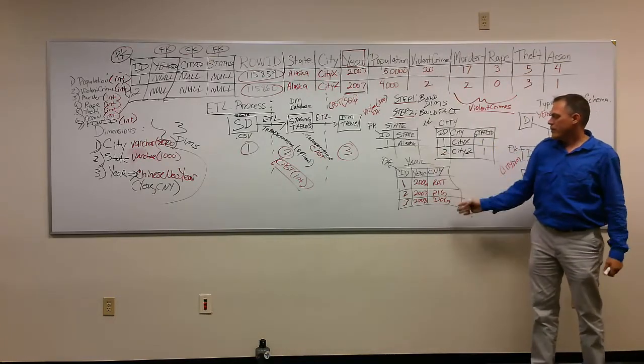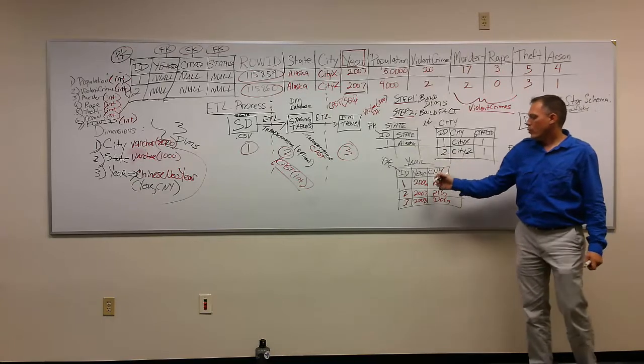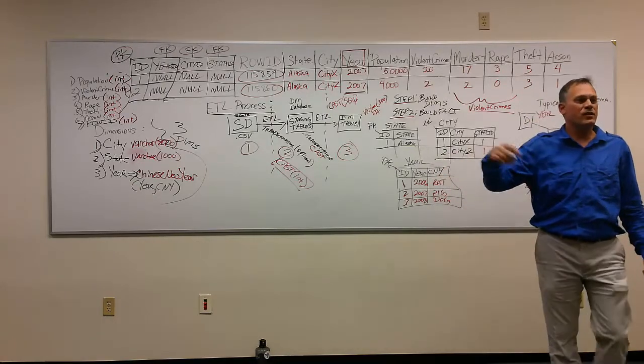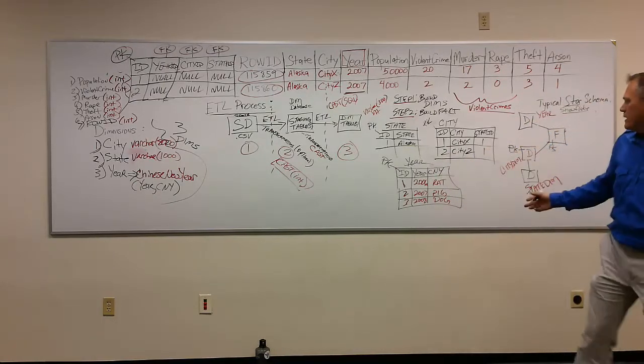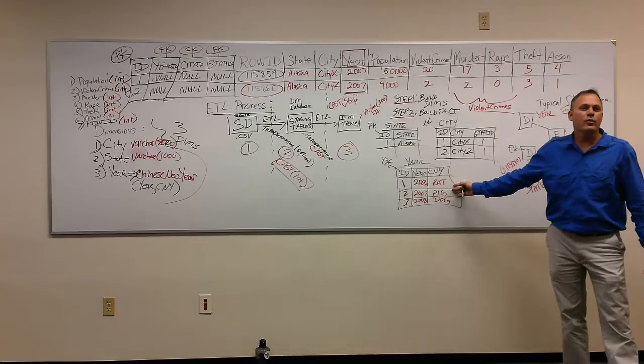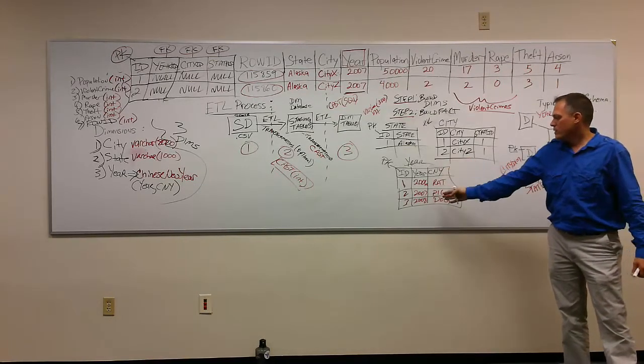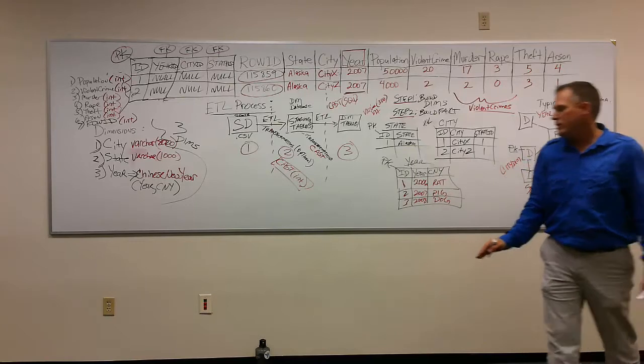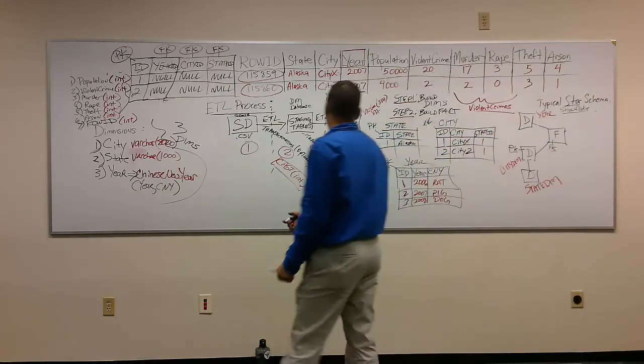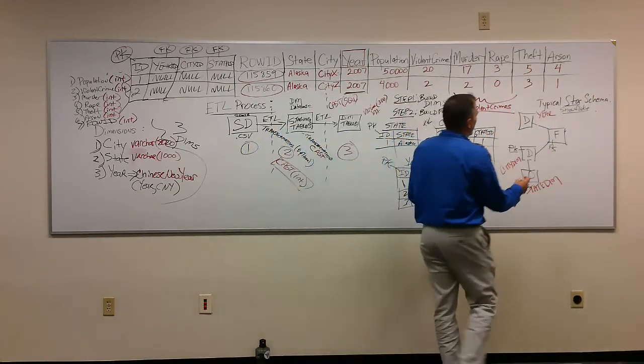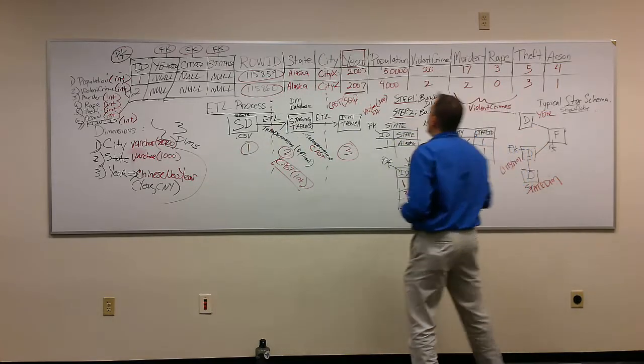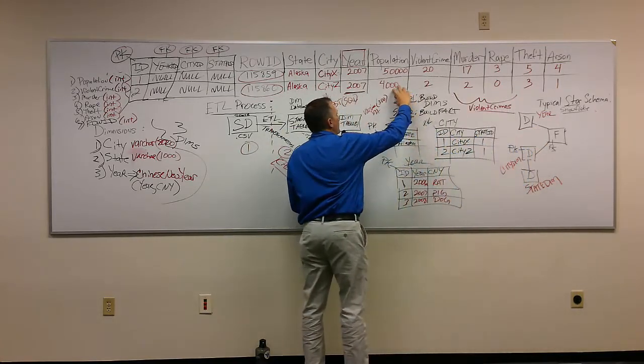Update year table, where the year equals 2006, set the Chinese New Year to the rat. Where the year is 2007, set the Chinese New Year to the pig, and so forth. All right, so now that we've built out our dimensions, we have completed step one.